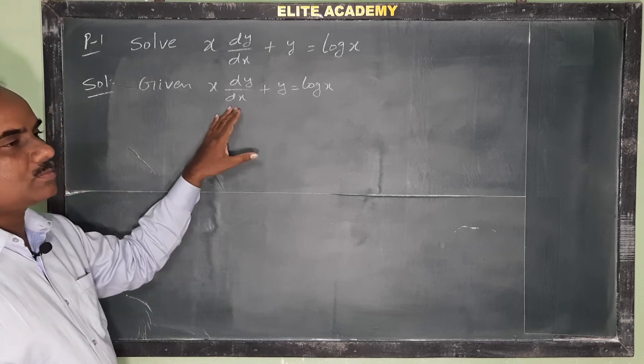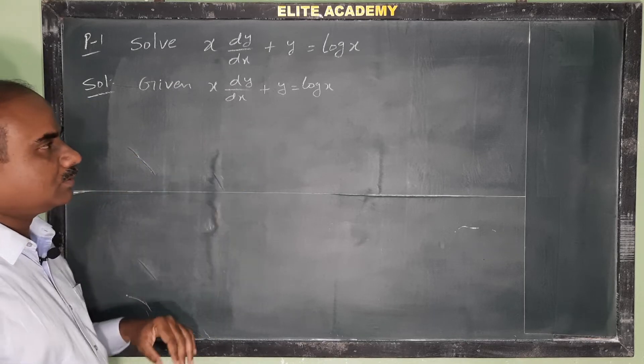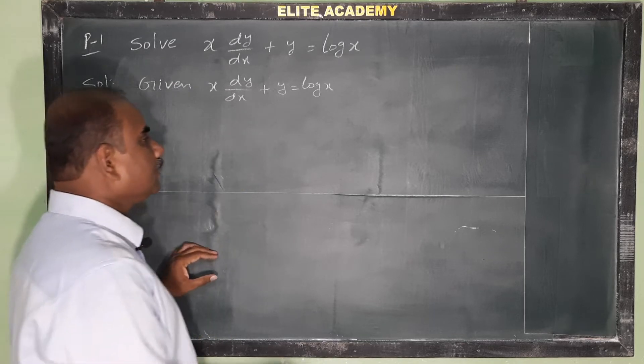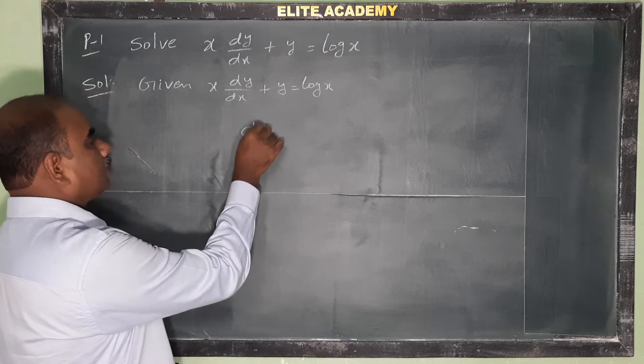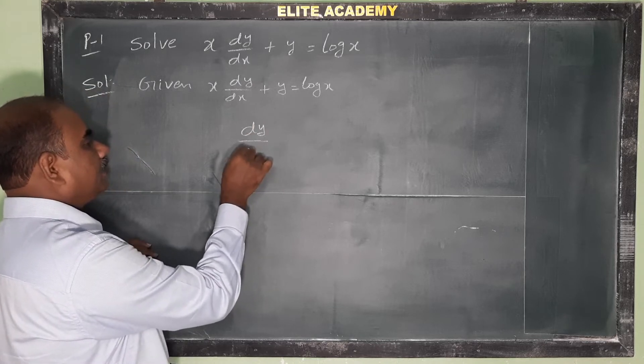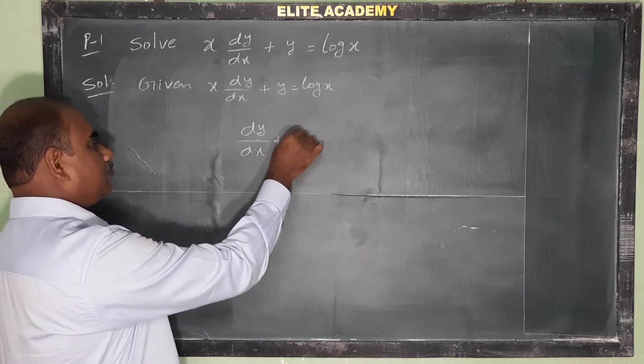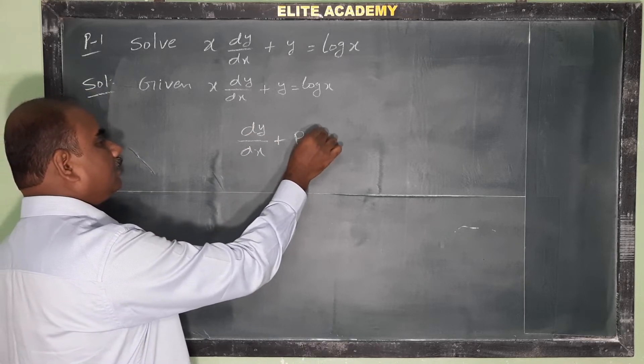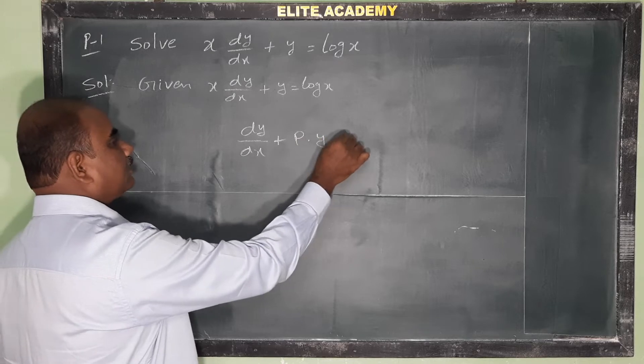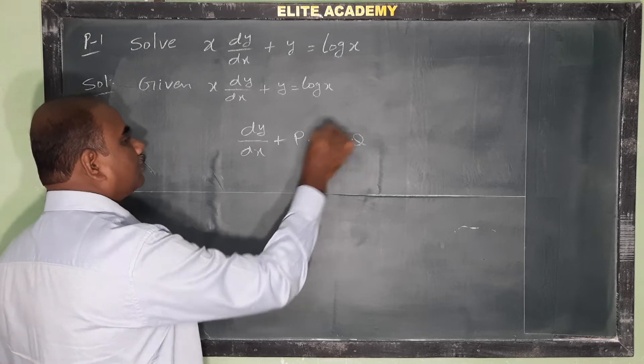The general form of a linear differential equation is dy by dx plus P into y is equal to Q.